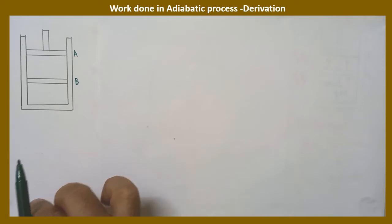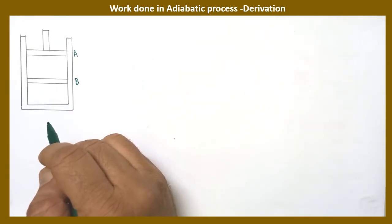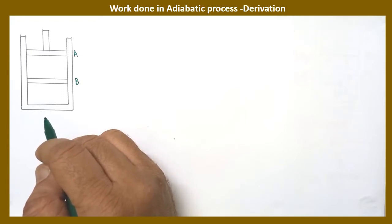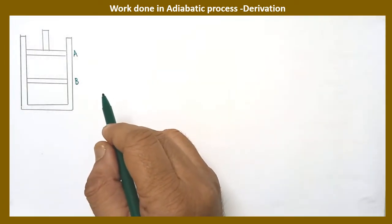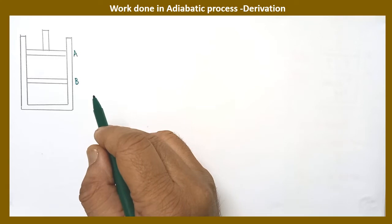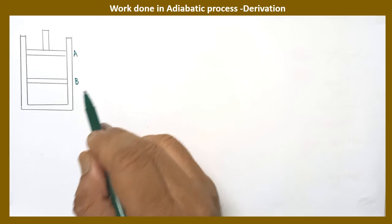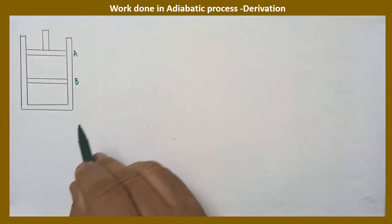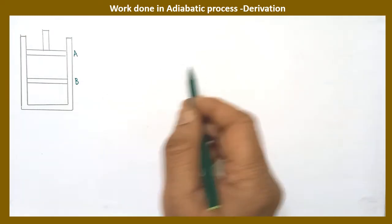We are going to derive the expression for work done in an adiabatic process. You have already learned about the adiabatic process in class — the definition and the equation of state. In the case of an adiabatic process, no heat flows into or out of the system, but the pressure, volume, and temperature of the system may change.